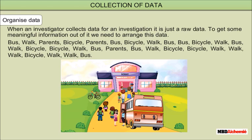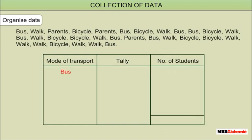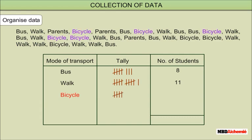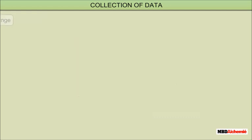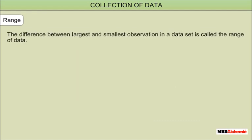Students coming by bus: 8 students. Students coming by walking: 11 students. Students coming by bicycle: 8 students. Students coming with parents: 3 students.